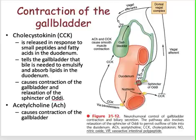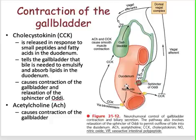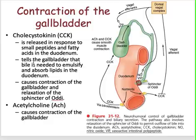What happens when you eat fatty food? When you eat fatty food and it reaches your duodenum, it sends a signal to your gallbladder through the release of your CCK, or cholecystokinin. When you eat fatty food, some of it will be broken down into fatty acids and small peptides. And in response to that, your intestine will secrete cholecystokinin, a hormone that tells your gallbladder that bile is needed to emulsify and absorb lipids in the duodenum.